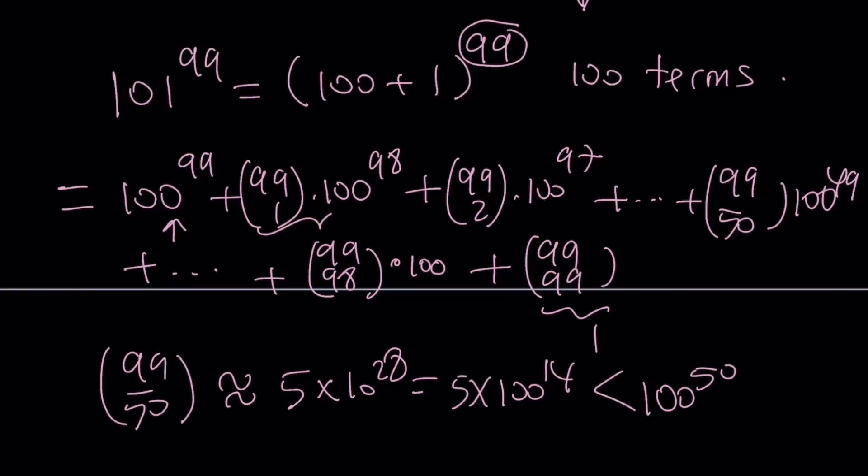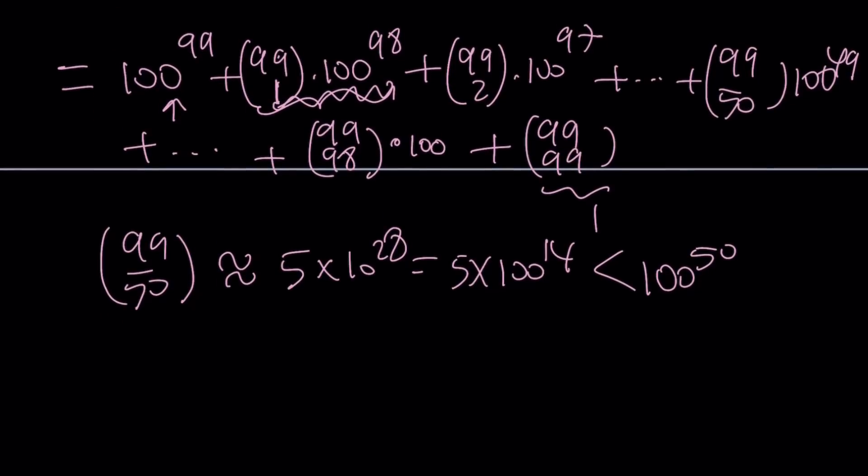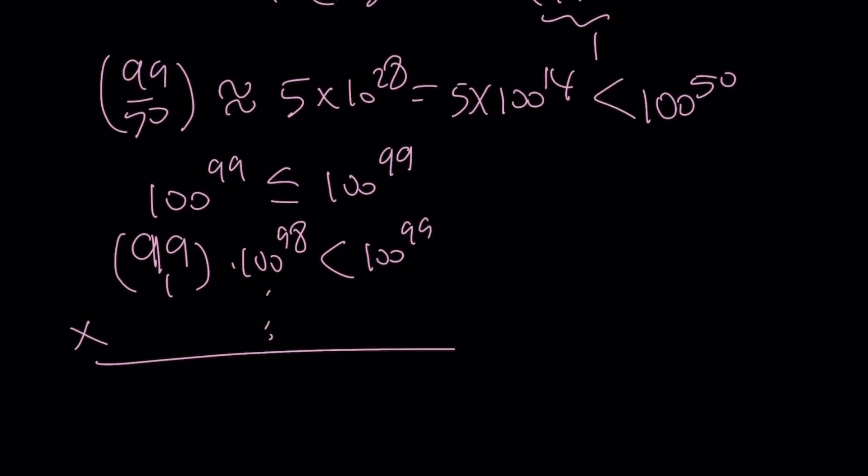So notice that this expression right here, 99 choose 1, is less than 100. Therefore, this product is going to be less than 100 to the power of 99. In other words, each of these terms, like I said earlier, is less than or equal to 100 to the power of 99. And then this guy here, 99 choose 1 times 100 to the power of 98, is less than 100 to the power of 99. We're going to multiply all of these expressions, and this is what we're going to get.